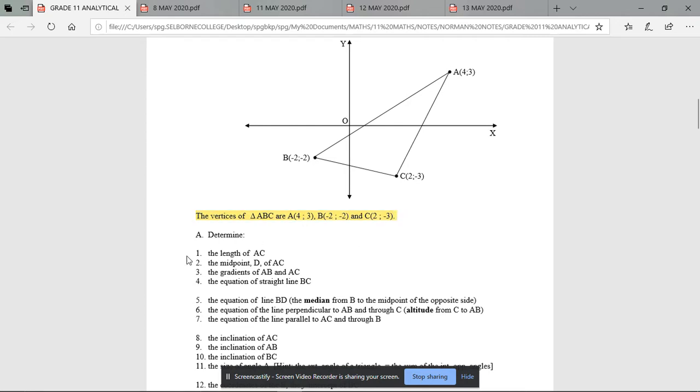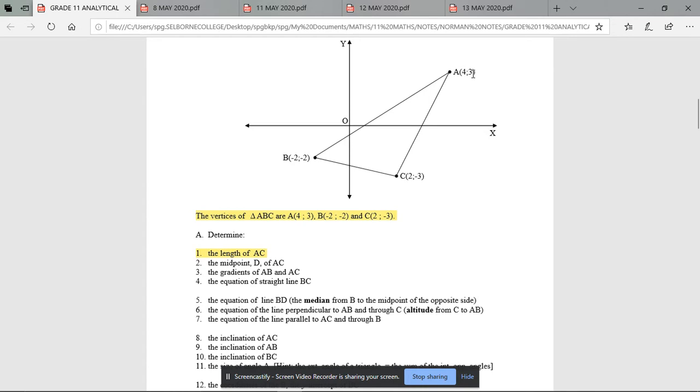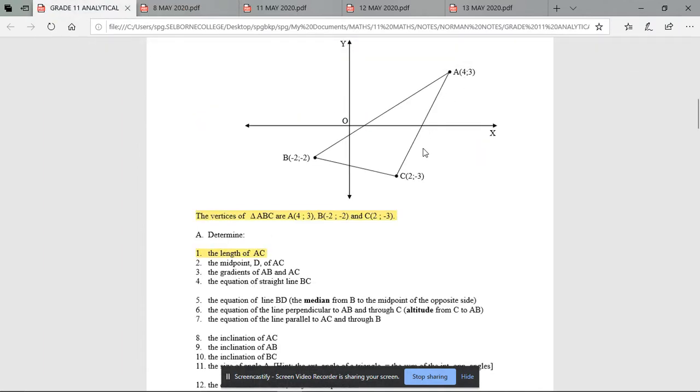The first question says calculate or determine the length of AC, and it should be easy because A and C are totally known. Their coordinates are given to you. If you look at the solution, there it is. 3 minus minus 3 in brackets squared refers to the two Y values. There it is, 3 minus minus 3 all squared plus 4 minus 2 all squared is the A's 4X value minus the C's X value of 2.